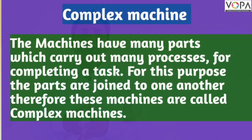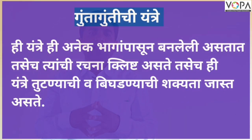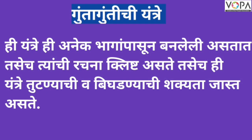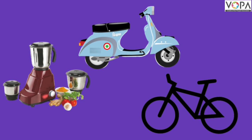Now we discuss about the complex machine. A complex machine is made from various parts of a machine which are joined to each other, and it includes some simple machine parts. It has a complicated structure. For example: mixer, scooter, bicycle, etc.